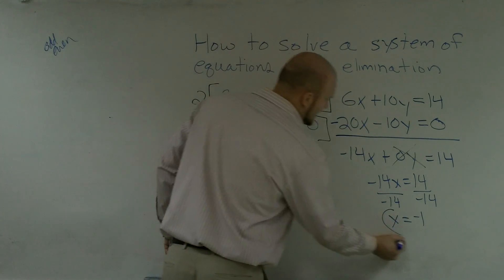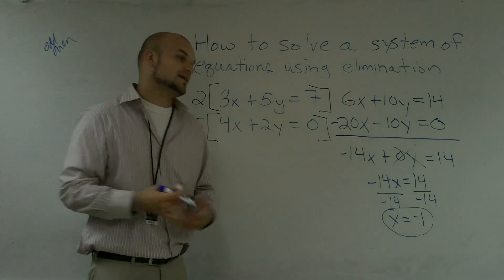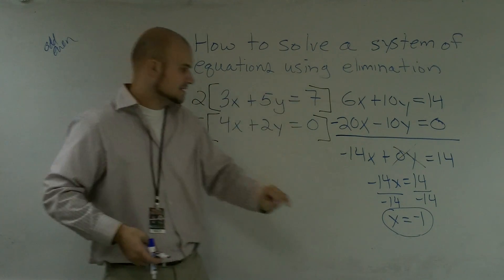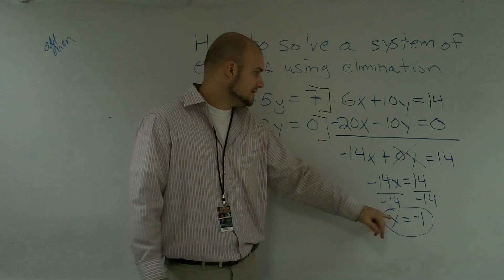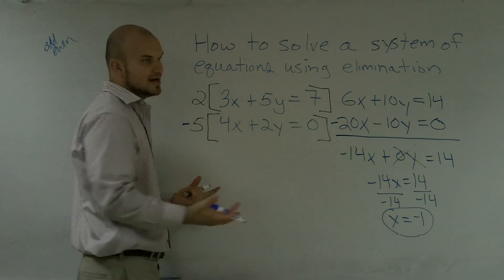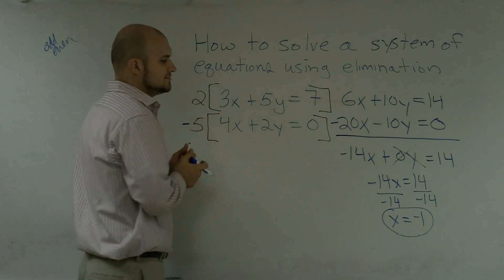Now, I've solved for negative 1. That is not my final answer. It says solve the system. The system has two variables, you have an x and a y. So I've done the hard part. Now all I need to do is plug in my negative 1 into one of these equations. It doesn't matter which equation you choose.